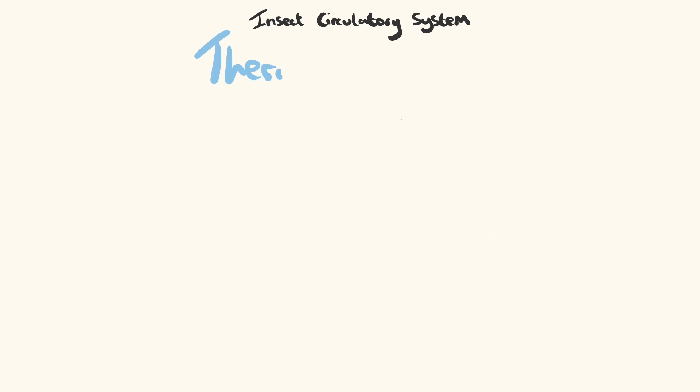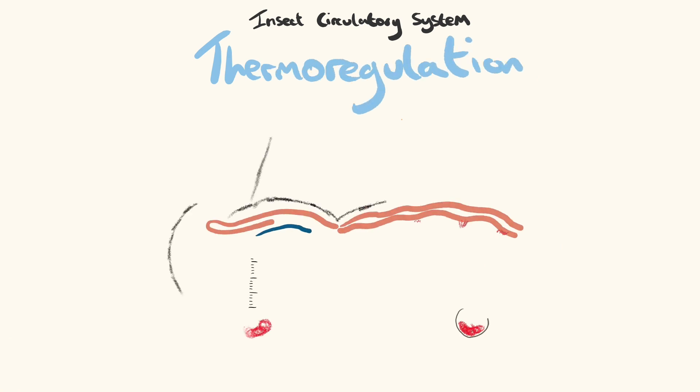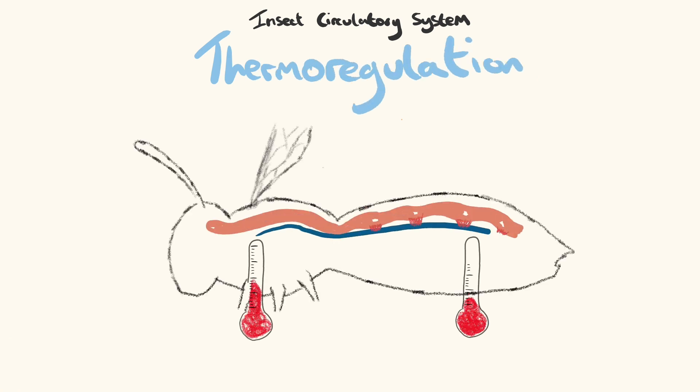Generally, as poikilotherms, insect body temperatures vary with the environment, but some may employ a number of physiological as well as behavioral methods to control temperature. This can involve the circulatory system.